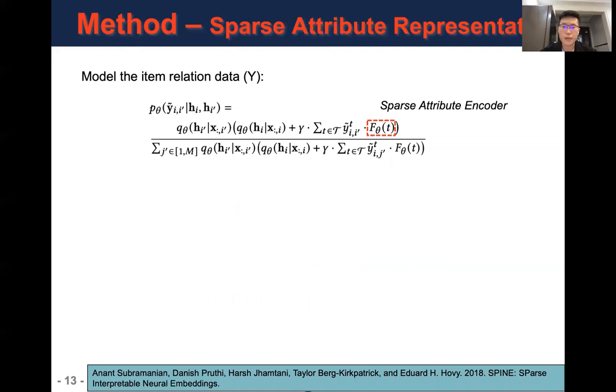The capital F theta denotes the sparse attribute encoder. Our intuition is an attribute only captures part of the information of an item. Therefore, it should be only grounded to part of the dimensions of the disentangled item representation. That's why we enforce the attribute representation to be sparse.